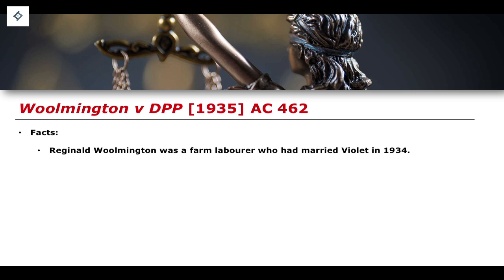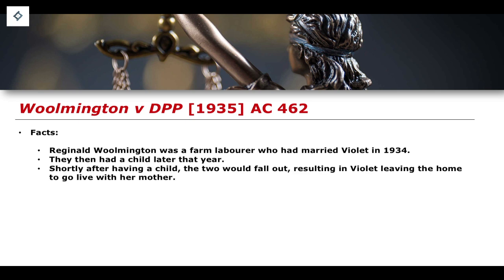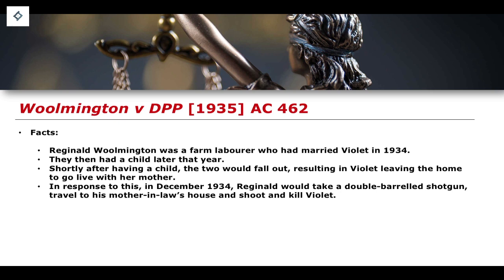In terms of facts, the defendant is a person by the name of Reginald Warmington, who was a farm labourer and who had married an individual by the name of Violet in 1934. They had a child a year later. Shortly after having the child, the two fell out and Violet left the family home to go and live with her mother. In December 1934, Reginald took a double-barrelled shotgun, travelled to his mother-in-law's house, and shot and killed Violet. He was subsequently arrested and charged with her murder.